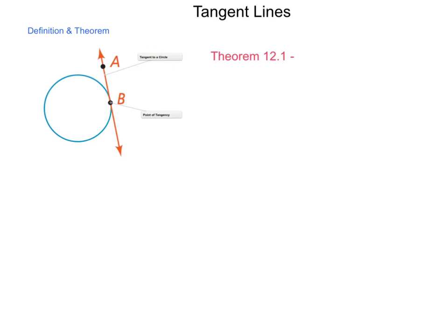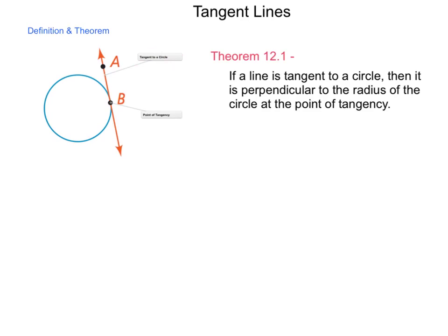Let's begin looking at tangent lines with Theorem 12.1. This one states: if a line is tangent to a circle, then it's perpendicular to the radius of the circle at the point of tangency.